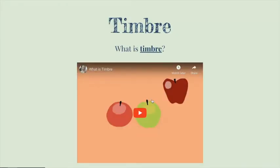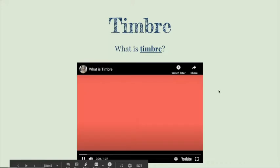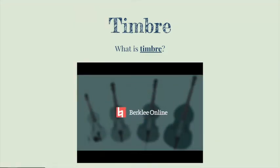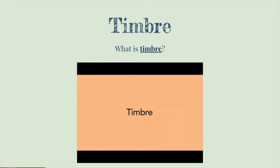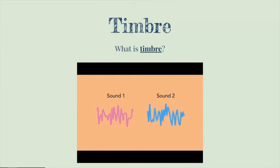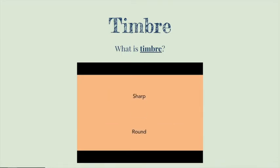First, let's talk a little bit about a musical word called timbre. Timbre. Another word for timbre is tone. Timbre is the distinguishing characteristic that differentiates one sound from another, despite the fact that they might be playing the same frequency with the same amplitude. When we're describing a sound's timbre, we use words like sharp, round, reedy, brassy, or bright to describe them.